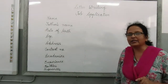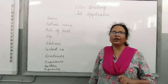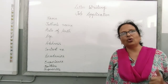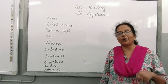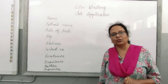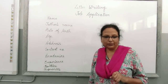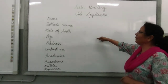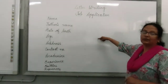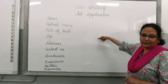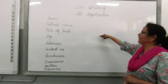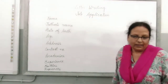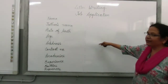Thereafter, address — address will be according to the question. In this question it is given as Bengaluru, so you will write that you are from Bengaluru. Thereafter comes the age. For age, you have to write years and months — calculate and then write.